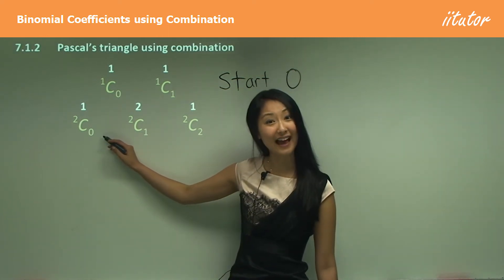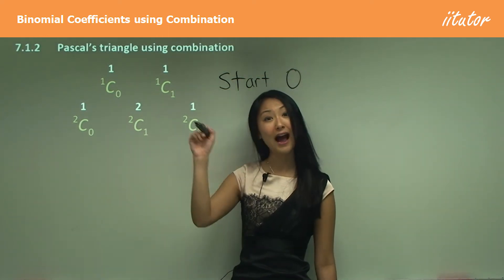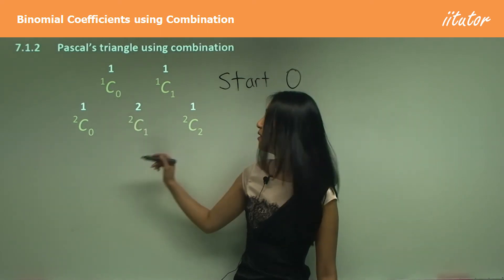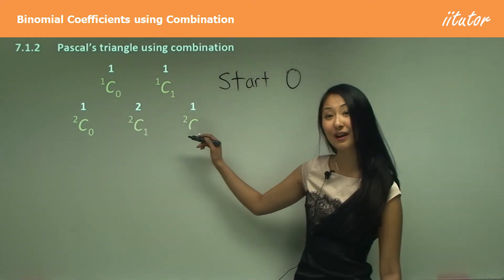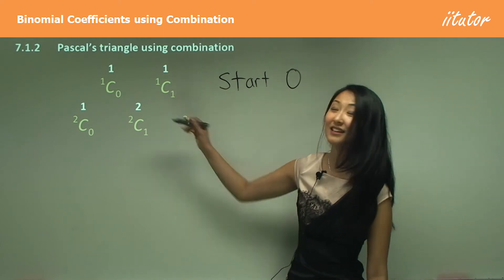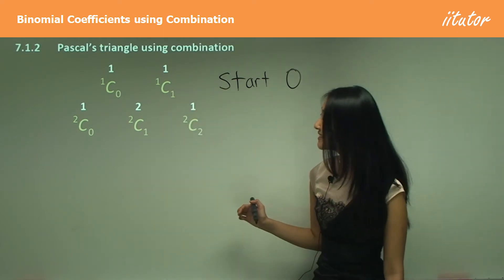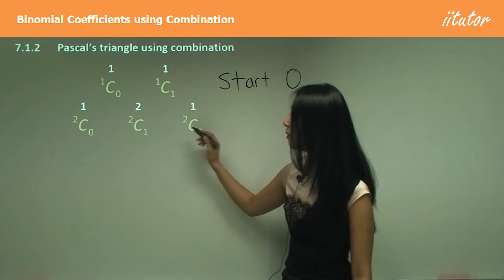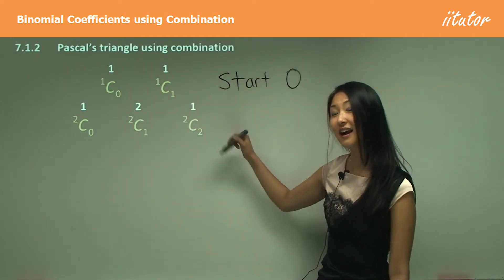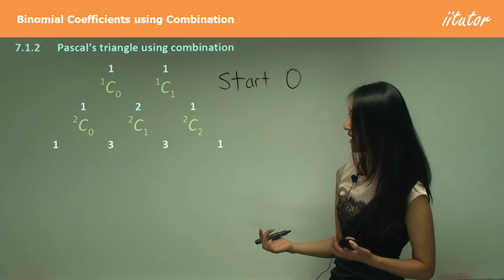So put that in your calculator. So remember, 2 and then C and 0, and you should get 1. What about this one? 2 and then C and 1. Good. It gives you 2, right? So you can see this is how we can use combination to work out these numbers.